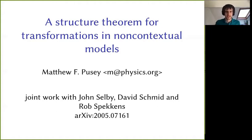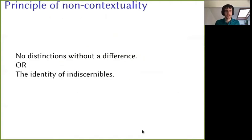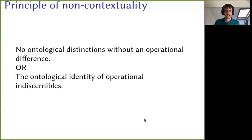I'll be saying all that a bit more precisely in a moment, but first I'll just recap this notion of non-contextuality that we're going to be using. This is based on a principle of non-contextuality, which loosely speaking says that you should have no distinctions without a difference, or to use Leibniz's language, it's the identity of indiscernibles. A bit more precisely, we're going to say that there should be no distinctions at the ontological level — the level of what's really going on — unless there's a difference at the operational level, the level we can see in the lab.